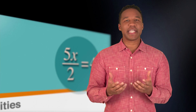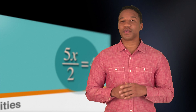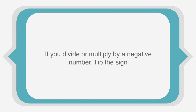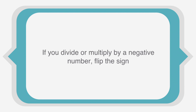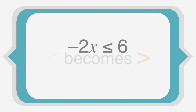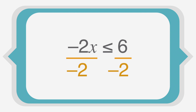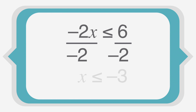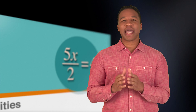You solve inequality expressions pretty much the same way as you'd solve an equation. There's only one difference: if you divide or multiply both sides by a negative number, you flip the sign, so less than becomes greater than. For example, if you had negative 2x is less than or equal to 6, you divide both sides by negative 2 to solve for x and flip the sign, so x is greater than or equal to negative 3. Because we divided by a negative number, we had to flip our sign.